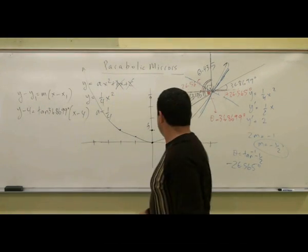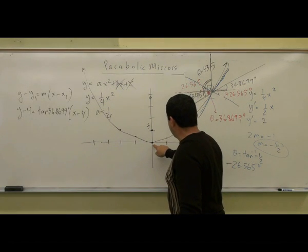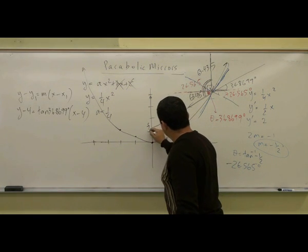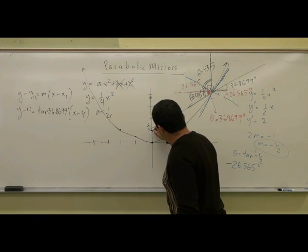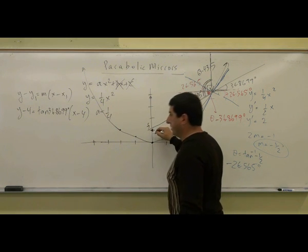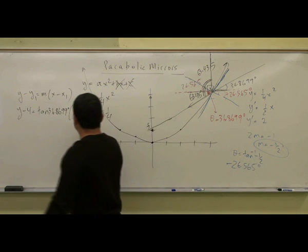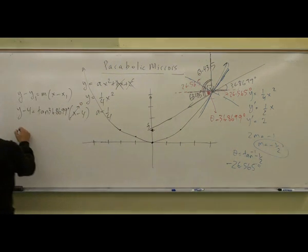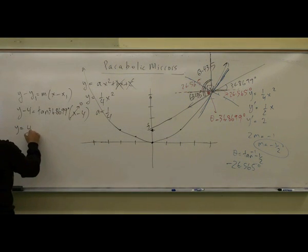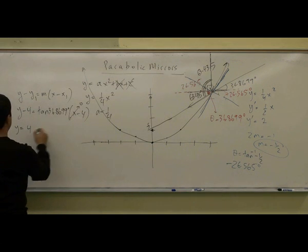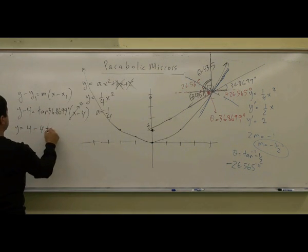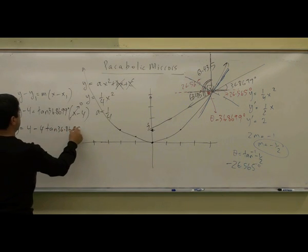Now let me show that when x equals 0, we want this line to go through that point. We don't want it to go above or below. So when x equals 0 here, what's y equal to? Set x equal to 0, you get y equals 4, and then the 4 goes over here and then minus 4 tangent of 36.8699°.